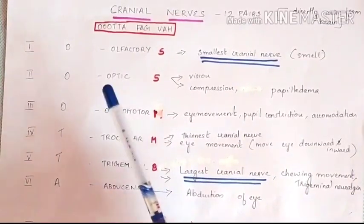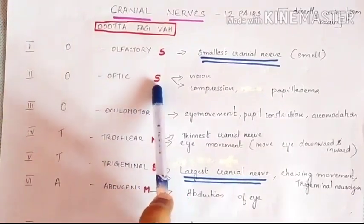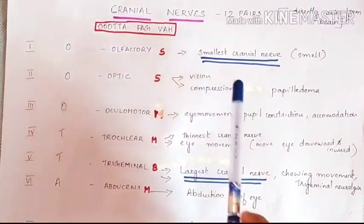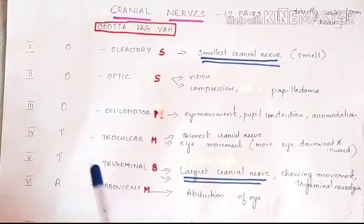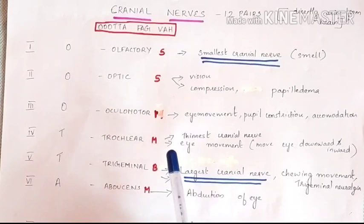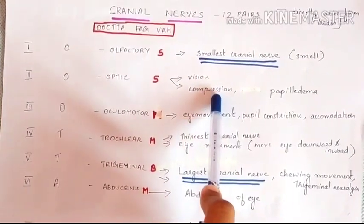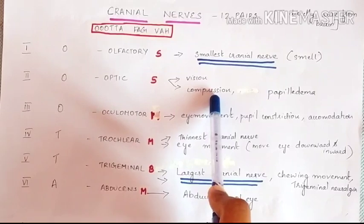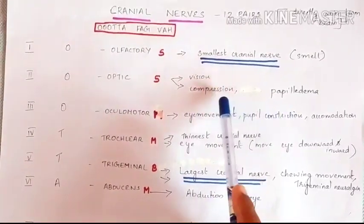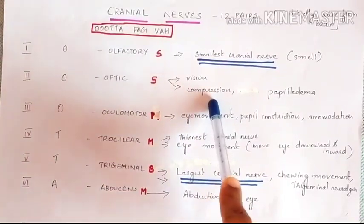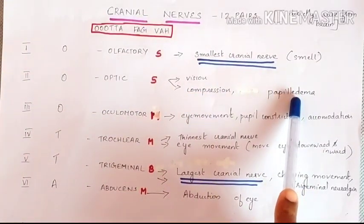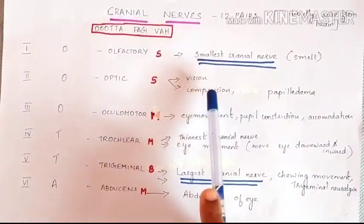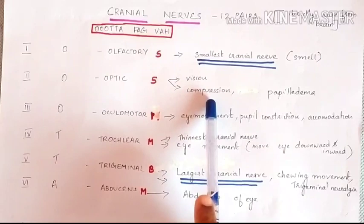The second cranial nerve is the optic nerve, also a sensory nerve. It controls both central and peripheral vision. Compression of the optic nerve — due to a tumor, pus, or fluid — can cause vision problems and blindness. Papilledema also occurs when the optic nerve swells due to increased intracranial pressure.